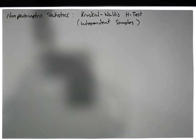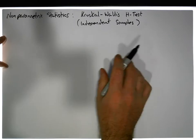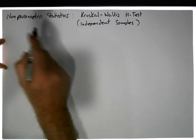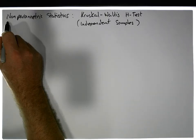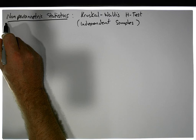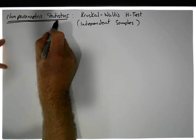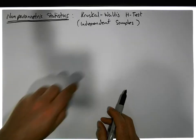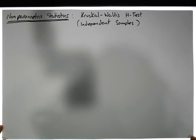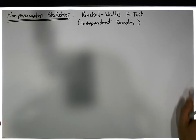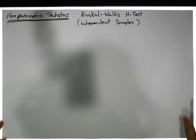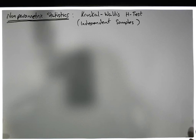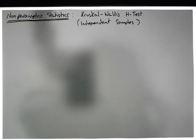Hi guys, this is Jonathan Lambert with the Mathematics Development and Support Service at National College of Ireland. In this video — another in a series dealing with non-parametric statistics — we're going to concentrate on the Kruskal-Wallis test for the difference between groups when there's more than two groups. It's a non-parametric test we usually undertake when we've violated the assumptions associated with ANOVA.